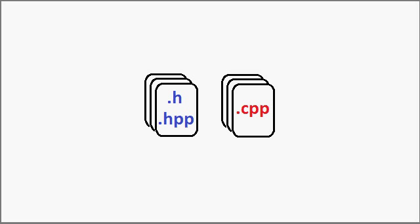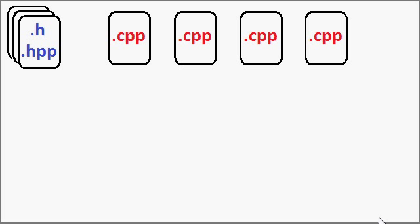At the end of the day, we end up with a whole bunch of header files and a whole bunch of source .cpp files when we're finished coding our program. Now we are ready to compile — let's see what happens. The first thing to know is that the compiler only compiles source files, files that finish with .cpp. Header files — .h and .hpp — are not compiled by the compiler.